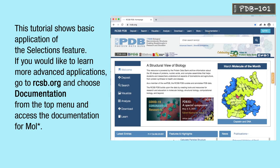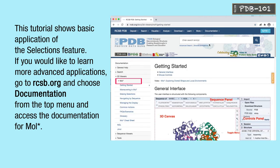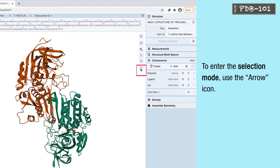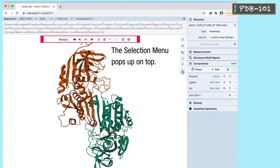This tutorial shows basic application of the selections feature. If you would like to learn more advanced applications, go to rcsb.org and choose documentation. Select documentation from the top menu and access the documentation from Molstar. To enter the selection mode, use the arrow icon. The selection menu pops up on top.